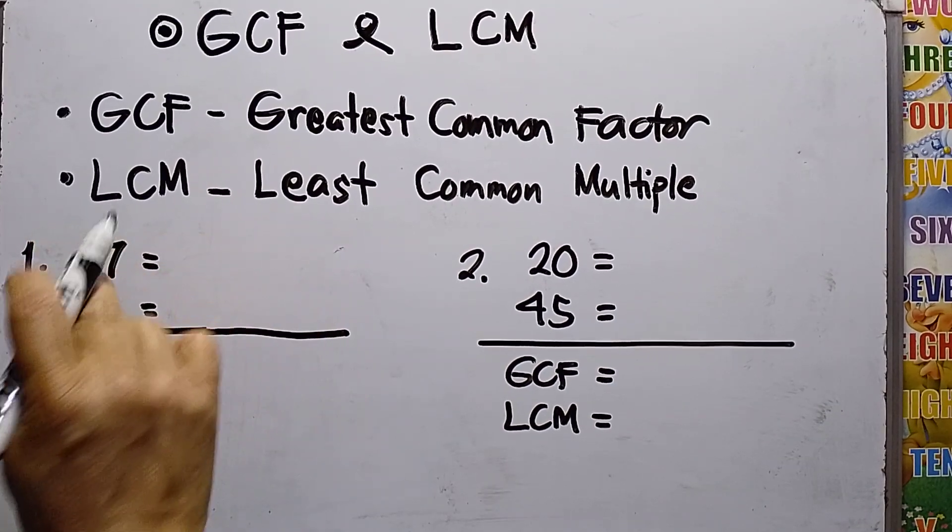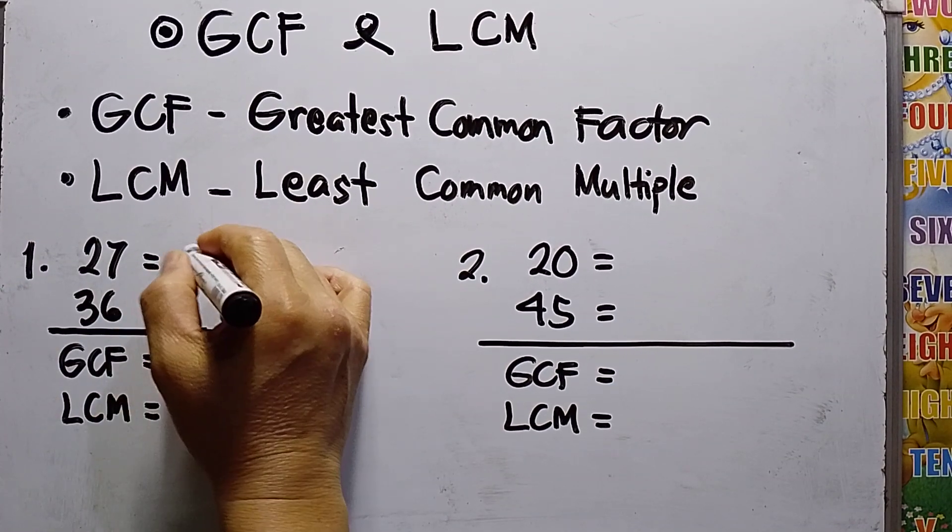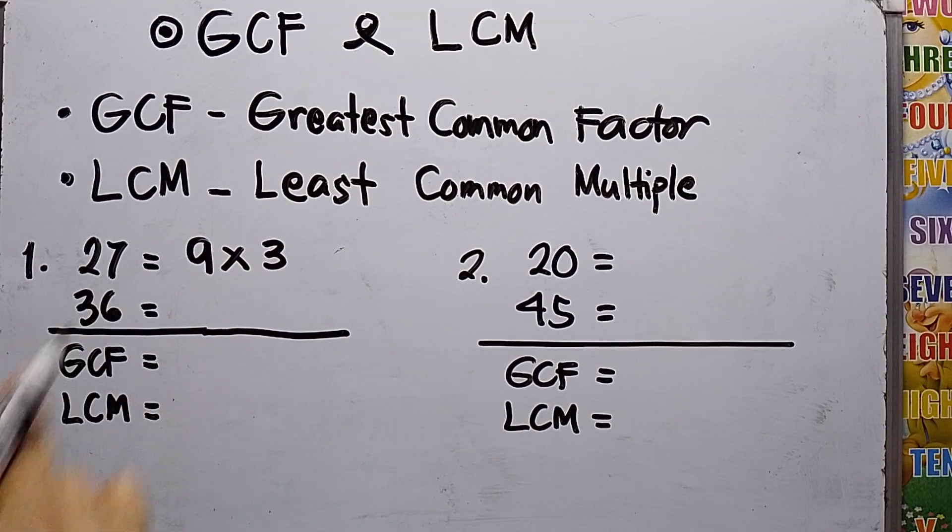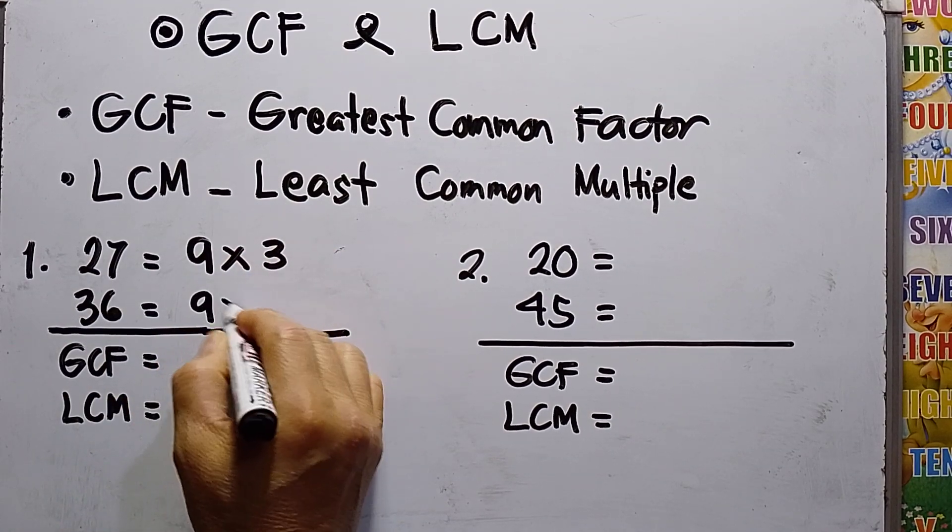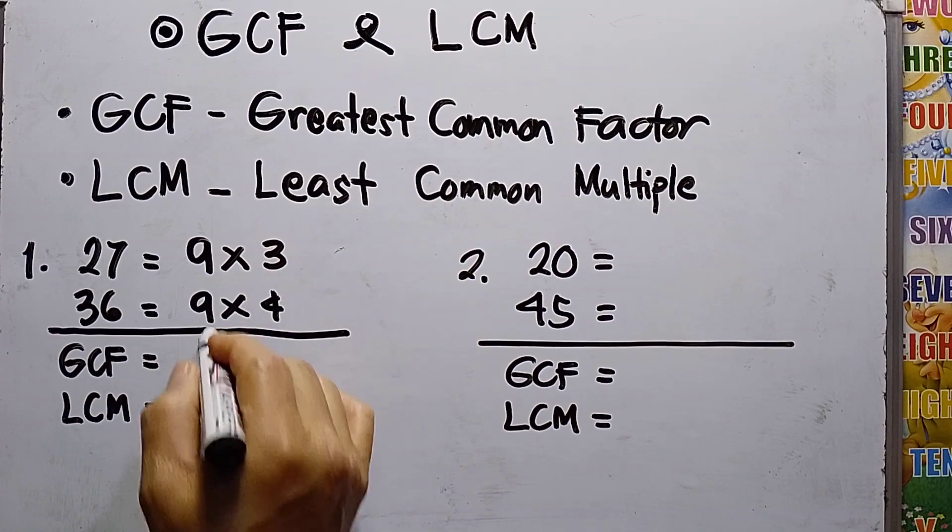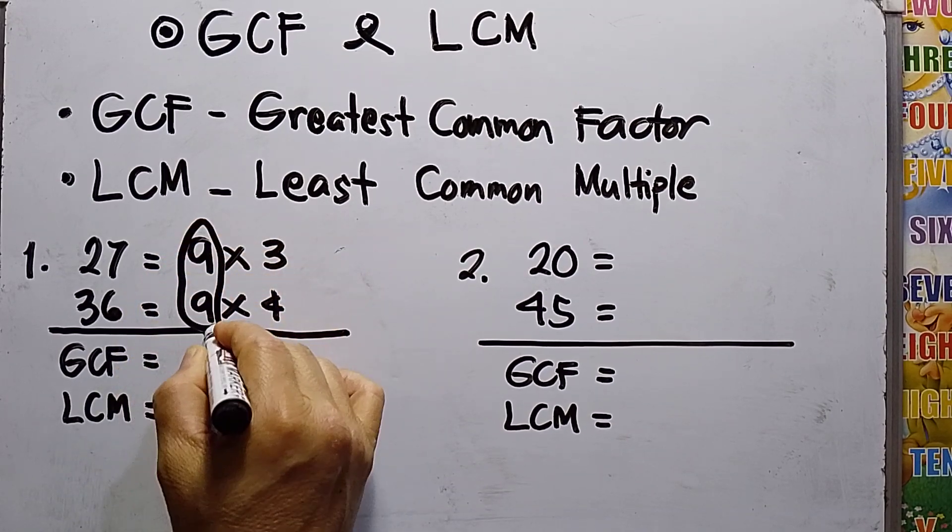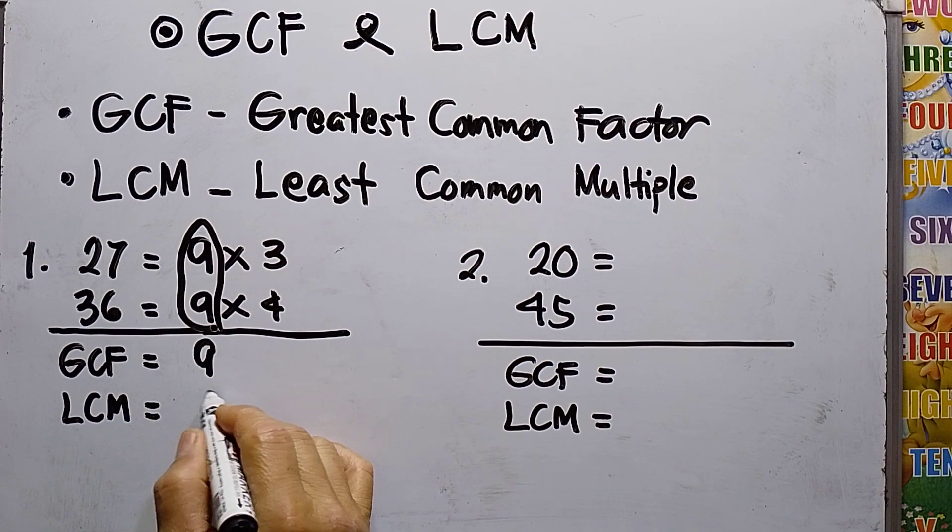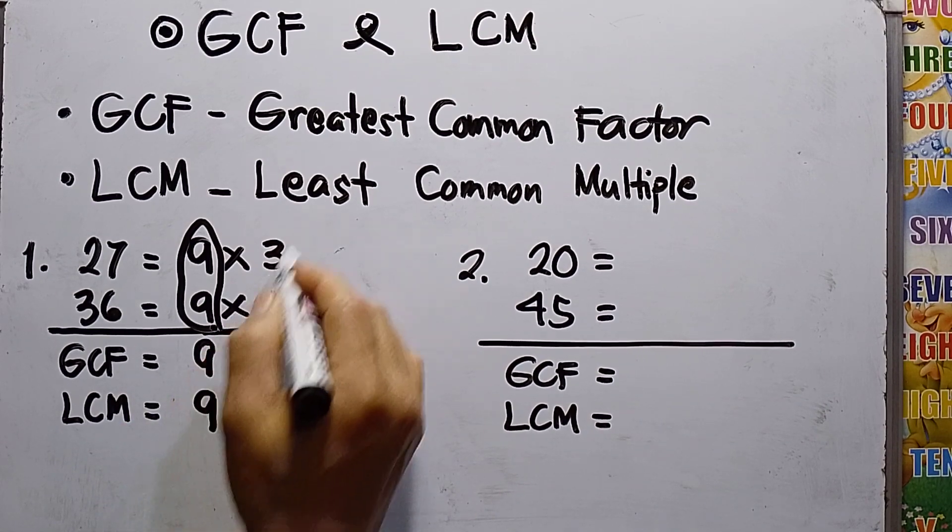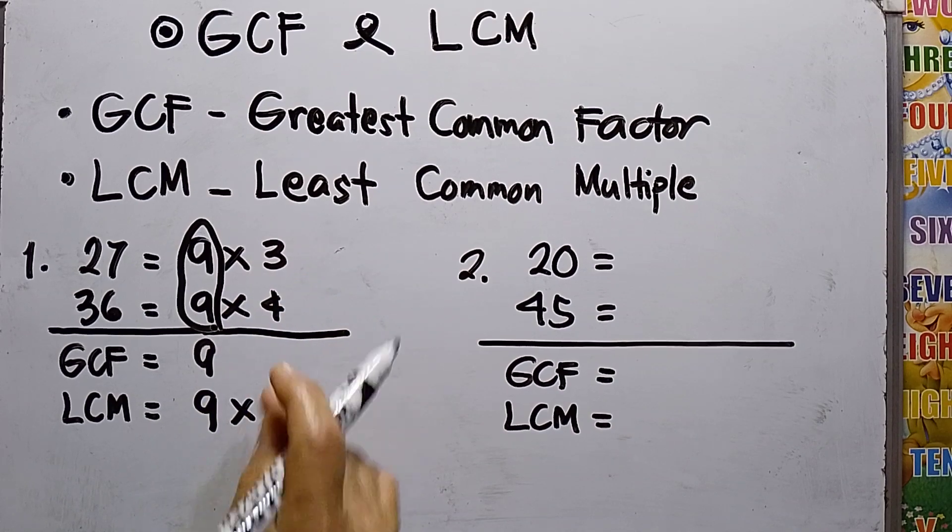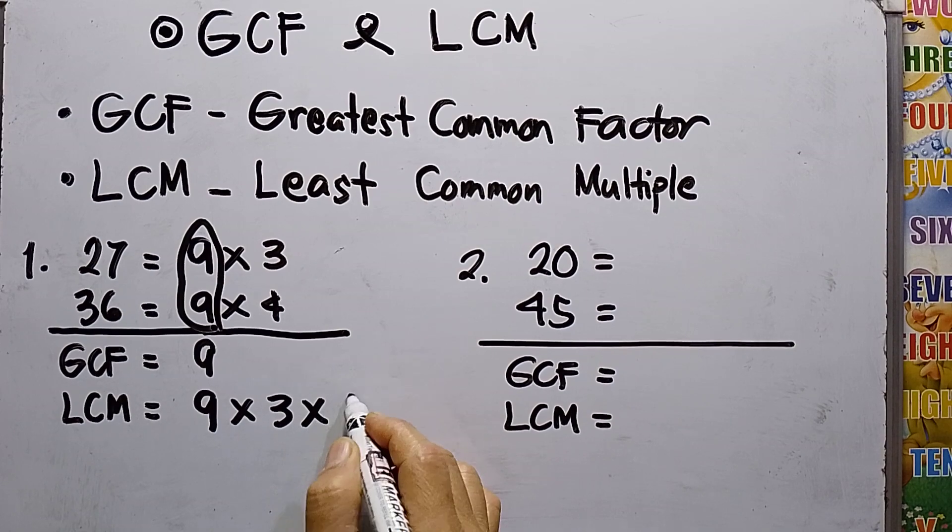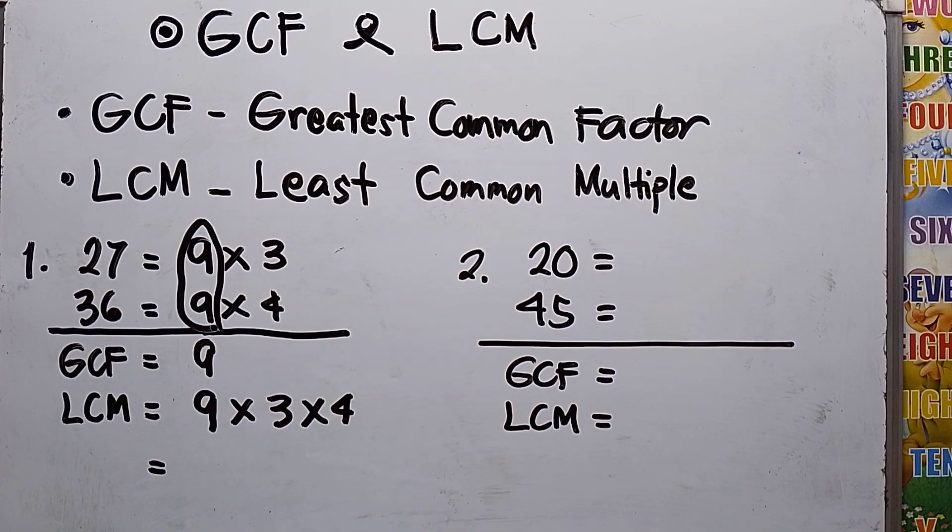We know that factors of 27 are 9 times 3. Then for 36, that will be 9 times 4. The common factor, or greatest common factor, is 9. How about the LCM? Copy the GCF, which is 9, and then the remaining factors are 3 and 4. So multiply 9 times 3 times 4.